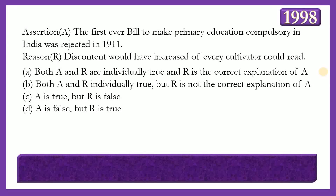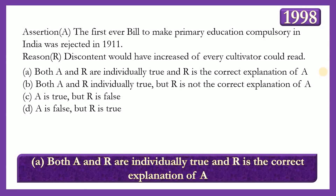Next assertion-reason question. Assertion: The first ever bill to make primary education compulsory in India was rejected in the year 1911. Reason: Discontent would have increased in every quarter at a good rate. The answer is option A — both A and R are individually true and R is the correct explanation — because the British government rejected the bill fearing it might spread discontent among the people.